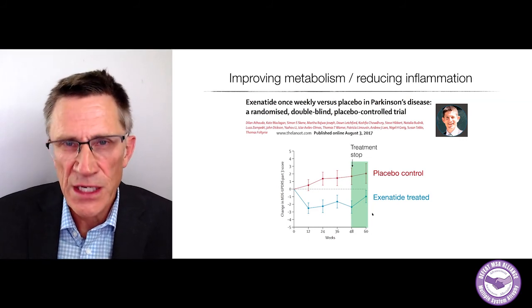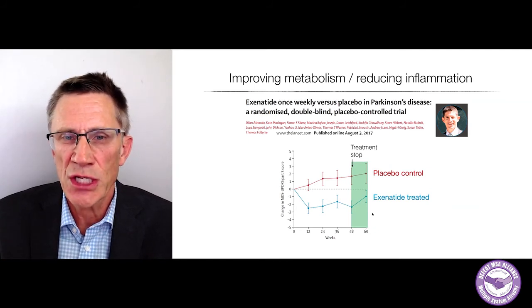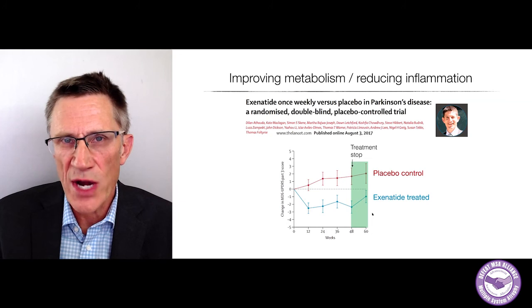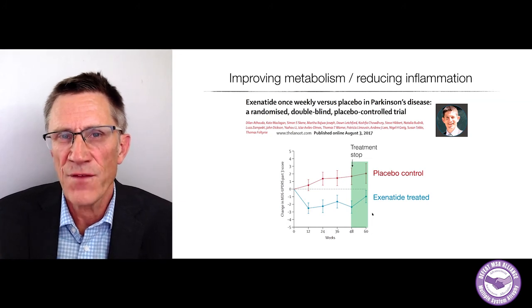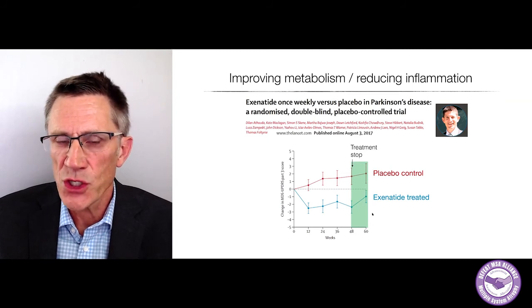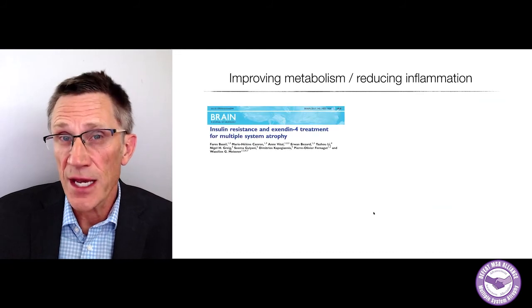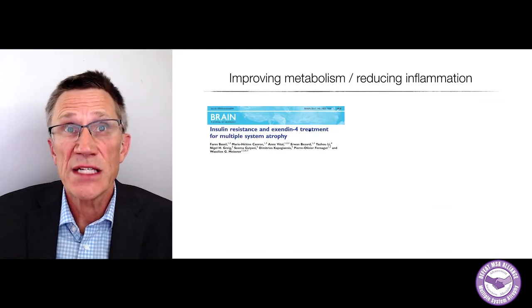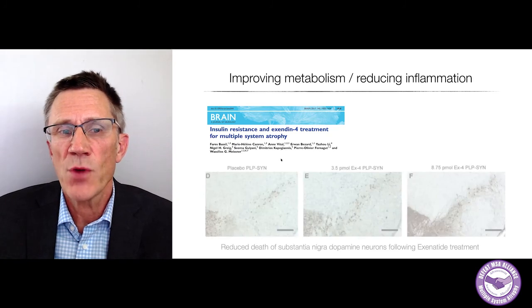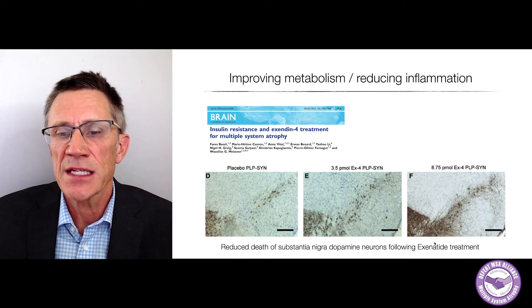This is not definitive proof — there's now a multi-center phase three trial just starting in Parkinson's disease to address whether this is really an effective therapy. Parkinson's and MSA share several features, so it's interesting to see if it works in MSA. Recent animal studies just three years ago in an MSA mouse model showed that you can protect substantia nigra dopamine neurons with Exenatide.